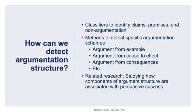Detecting argumentation structure is an active area of NLP research. Recently, it has generally been done using classifiers to identify spans of text corresponding to claims, premises, and non-argumentation. There are also models that examine more specific forms of argumentation — for example, identifying arguments based on examples versus cause and effect versus consequences and so forth — and some work has been done to study how different aspects of argumentation structure impact an argument's success.